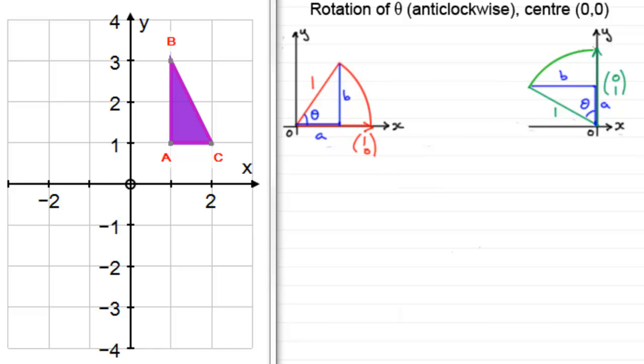So by trigonometry, we can find out a and b. For this triangle, you can see that the cosine of theta compares the adjacent side to the hypotenuse, so cos theta equals a over one, therefore a equals cos theta.